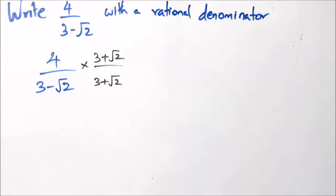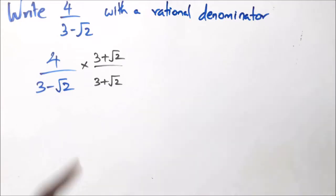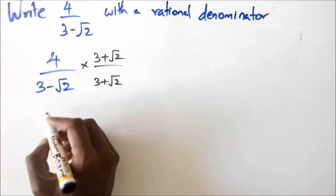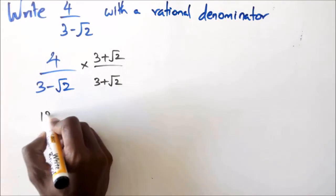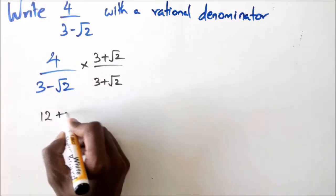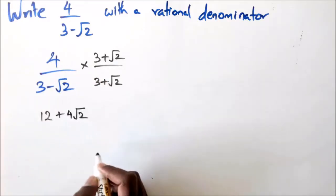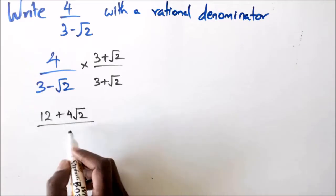You could have also done it with negative 3 minus √2 and still got the same answer, but ideally you'd want to use the opposite sign on the square root term to keep it easy. So in the numerator I have 4 times 3 is 12, and 4 times √2 is 4√2.